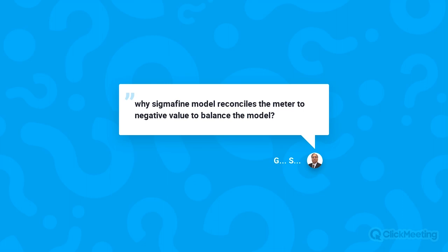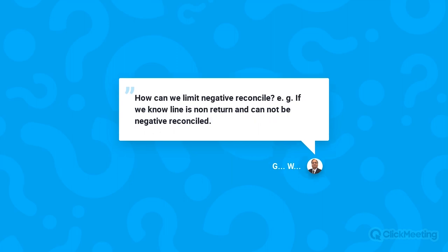Why does the Sigma Fine model reconcile the meter to a negative value to balance the model? This is a good question. Going back to the model view — you see negative values here because we set up the flow in this direction. So simply, a minus value means the flow is in that direction. You can start to identify the direction of the flow in the pipeline. Regarding how to limit negative reconcile values — for example, if we know a line is non-return and cannot be negative reconciled — there is no negative reconciliation in that sense; the negative value is dedicated just to the direction of the flow.